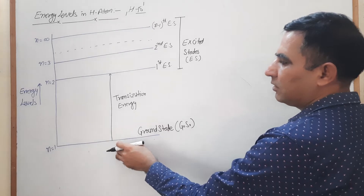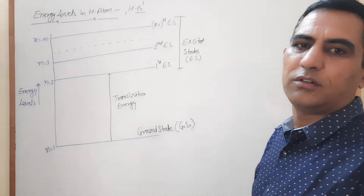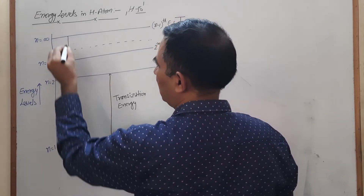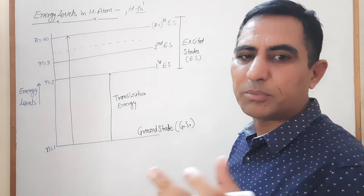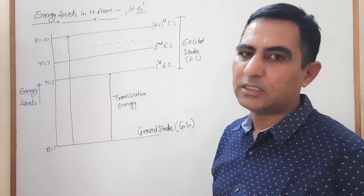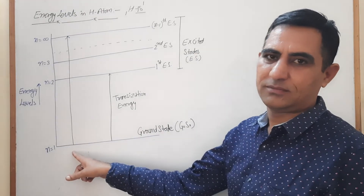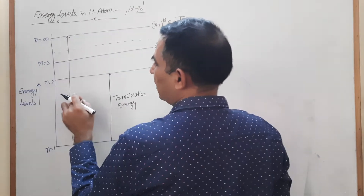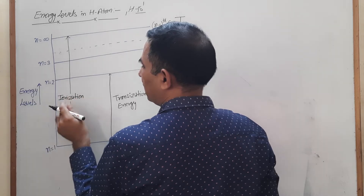Whether the electron is moving from the first to the second, first to the third, or to any other energy level, this energy is the transition energy. If an electron moves from the first orbit to the infinite orbit, we must supply energy to it, and that amount of energy is known as ionization enthalpy — the minimum amount of energy required to separate the electron from the ground state to the infinite state.